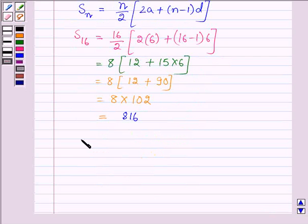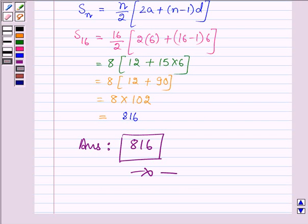Hence, the answer is: the sum of all the natural numbers less than 100 which are divisible by 6 is 816. This completes the session. Bye and take care.